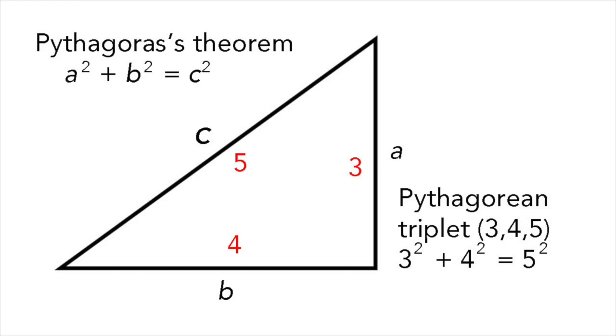A Pythagorean triplet, or Pythagorean triple, is a set of three whole numbers that satisfies Pythagoras' Theorem. Let's find out more about these interesting trios of numbers.